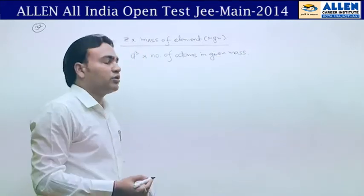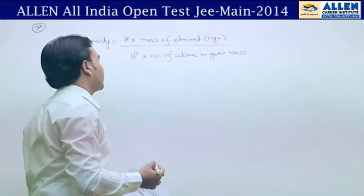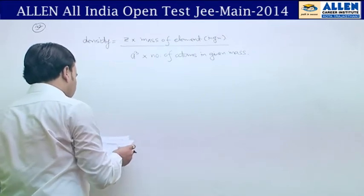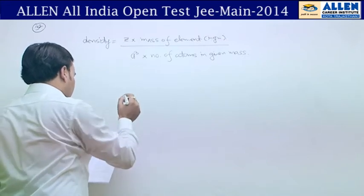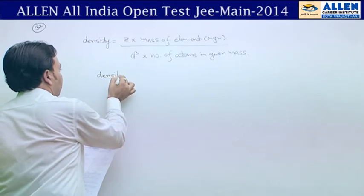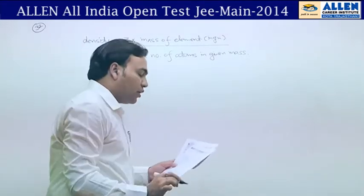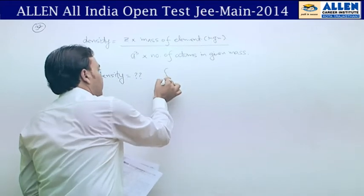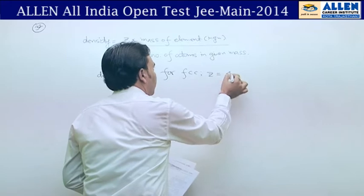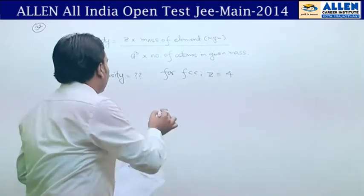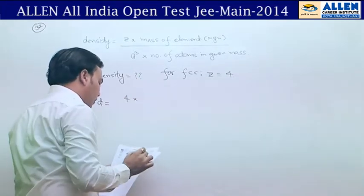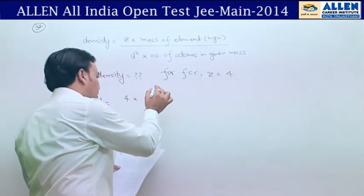This is a solid state density question. The structure is FCC, so Z equals 4. We will substitute: density equals Z times mass of element. Mass of element is given as 100 g.